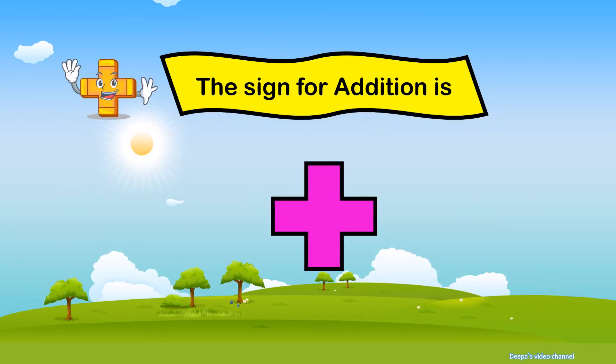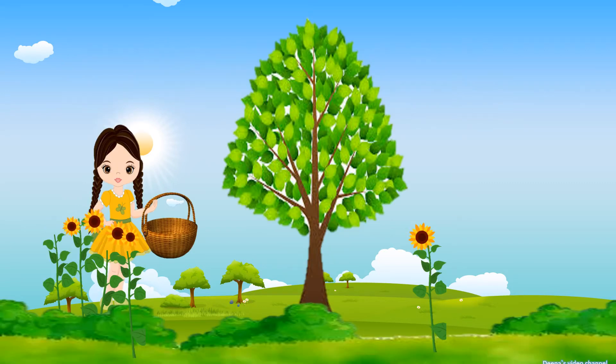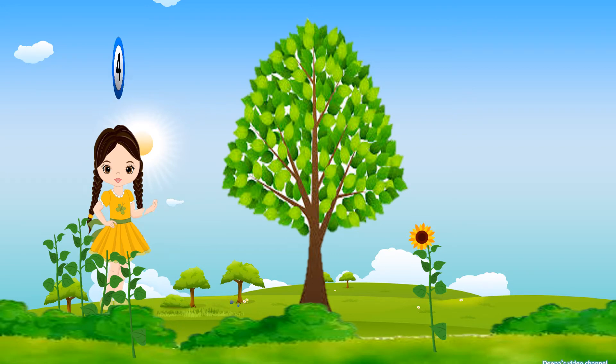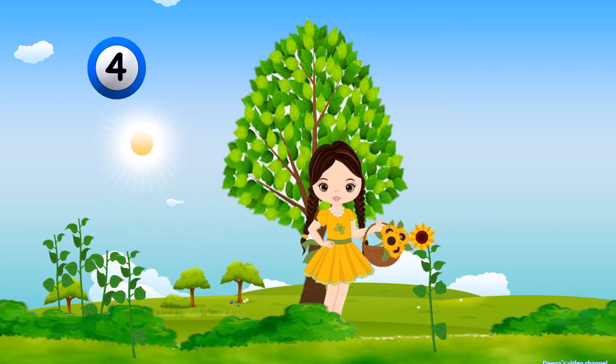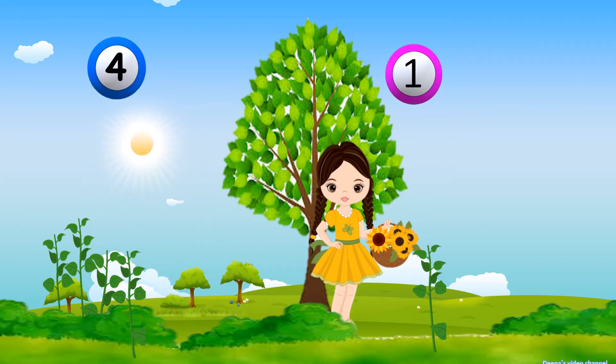The girl plucks four flowers at one place. Then she walks along the way and again she plucks one more flower.